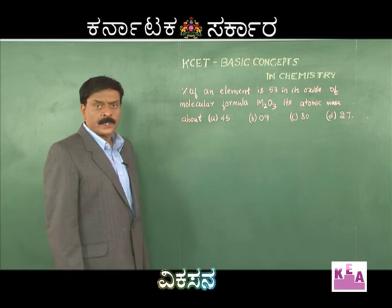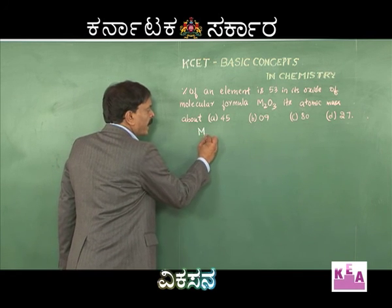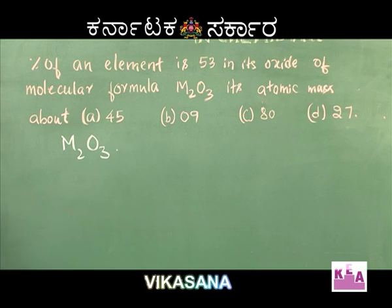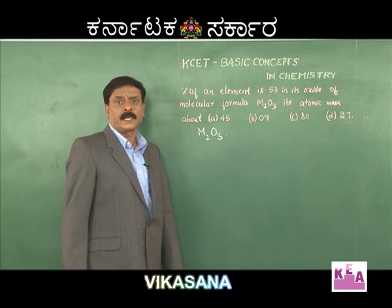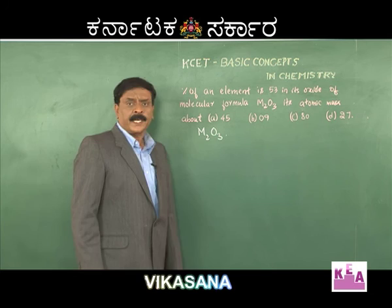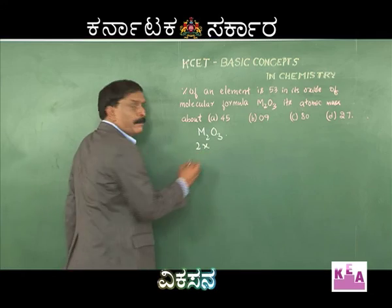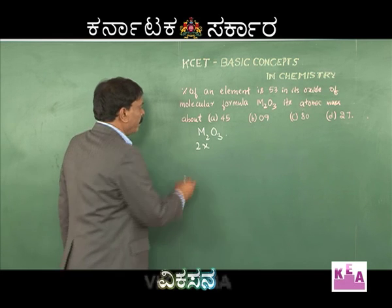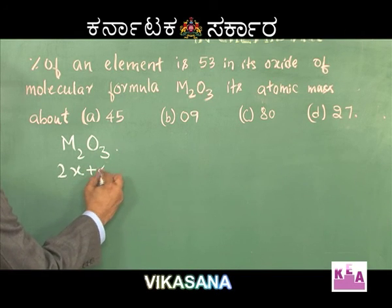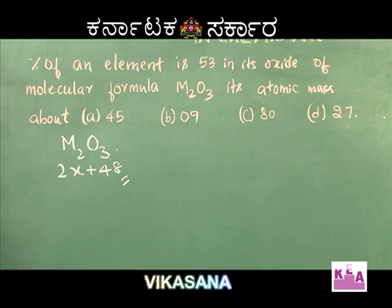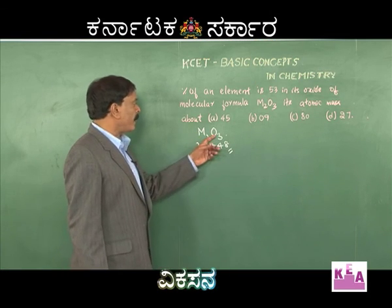Students, note that the molecular formula of the oxide is M2O3. We have to calculate the atomic mass of M. Let us say that the atomic mass of M is x; then the molecular mass of M2O3 will be 2x plus 16 into 3, that is 48. So 2x plus 48 is the molecular mass of M2O3.